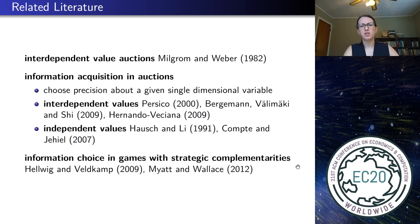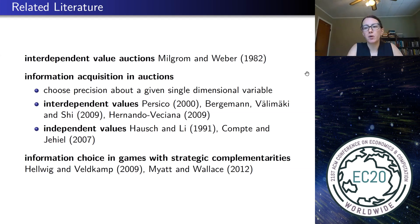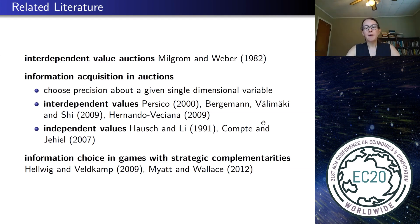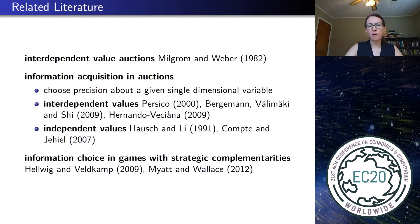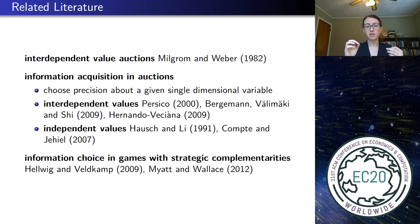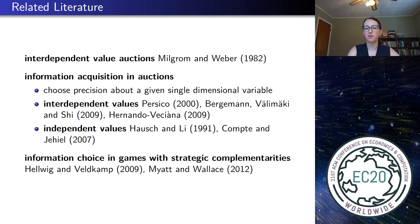Let me mention that I'm building on the interdependent value framework from Milgrom and Weber's seminal 1982 work. People have been asking how bidders learn in auction environments — for example, the paper from Persico, which is probably closest to mine. The difference is that most of those papers ask how much information about a given component bidders acquire, in the sense of Blackwell sufficiency or accuracy from Lehmann. I'm not fixing a value paradigm like IPV or interdependent values; it's not about how much information but about which aspect to learn about — that's where I differ from the literature.